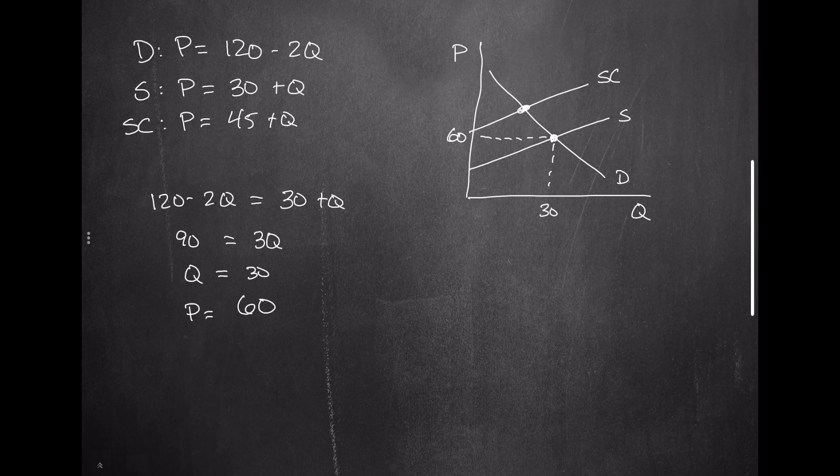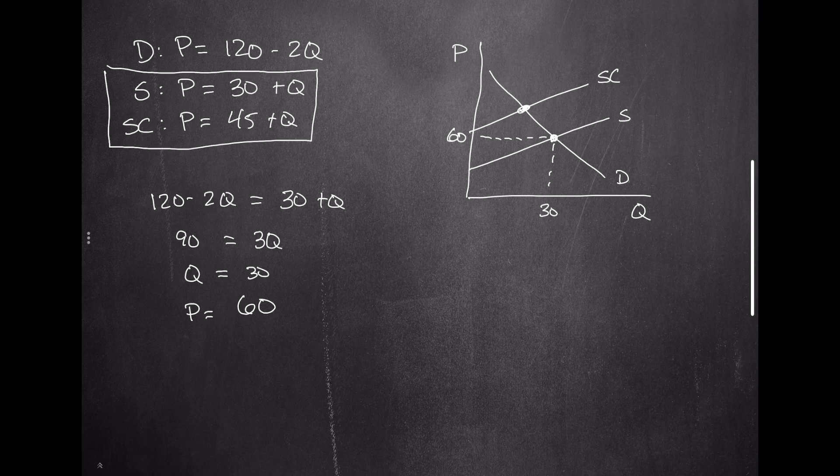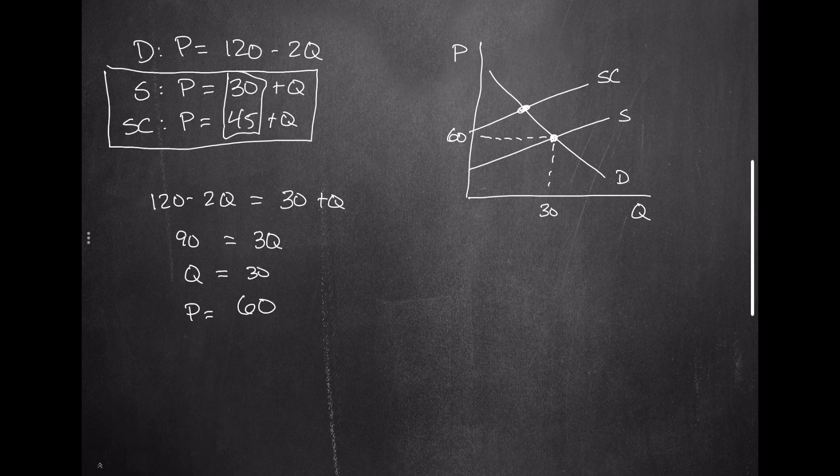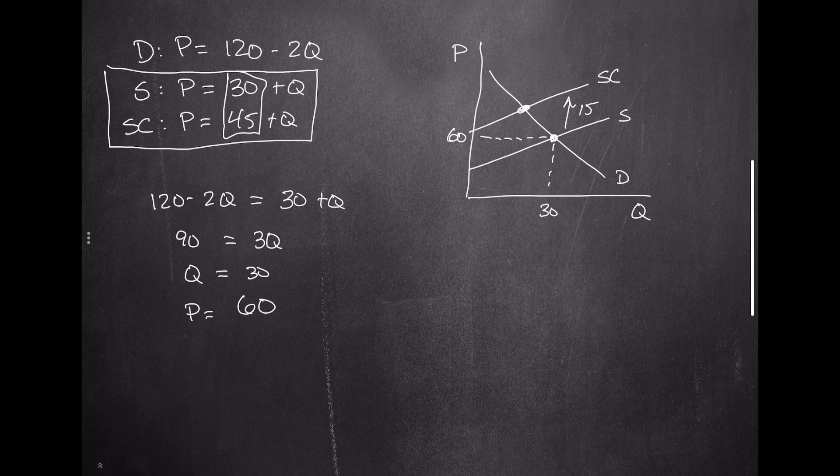Now we know that this is inefficient. But the question is how inefficient is it? And the other question is what sort of tax is it going to take to bring this into alignment? Here's the trick: notice the difference between the two supply curves. The social supply curve is 15 units higher than the private one. So there needs to be a $15 per unit tax to solve this problem. And indeed, that is the answer.